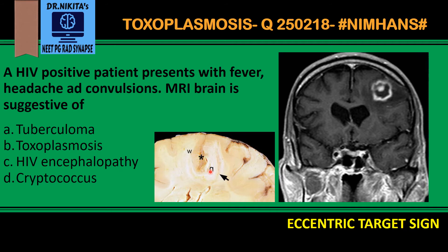Additionally, eccentrically running in the sulcus is a vessel which enhances. So basically, the eccentrically located vessel gives the eccentric target sign. This sign is very specific for toxoplasmosis but is not sensitive, meaning it will not be seen in all patients with toxoplasmosis. However, when it is seen, it is very specific for toxoplasmosis, especially in an HIV positive patient.